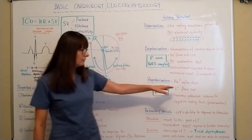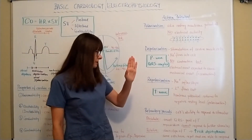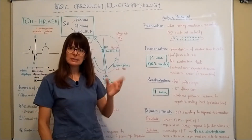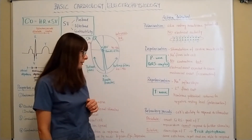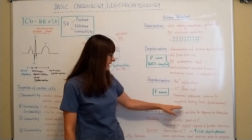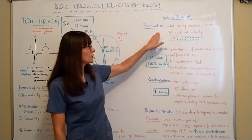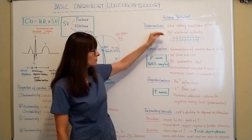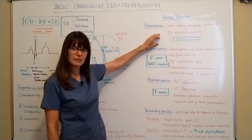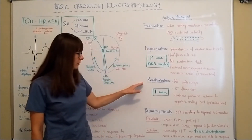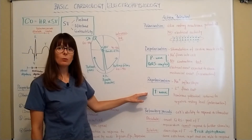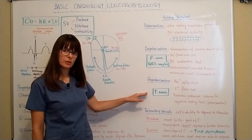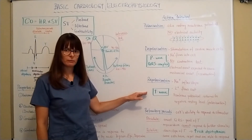Repolarization is when the influx of sodium into the cell stops and potassium flows out — whenever something goes in, something else has to come out to maintain balance between positively and negatively charged ions. The membrane potential returns to a negative resting level, which is the polarization, or resting membrane potential. Repolarization on an EKG strip is represented by the T wave, which is ventricular repolarization.